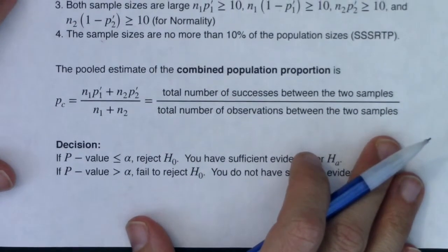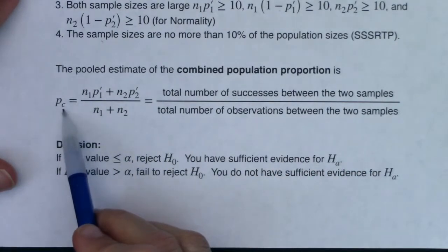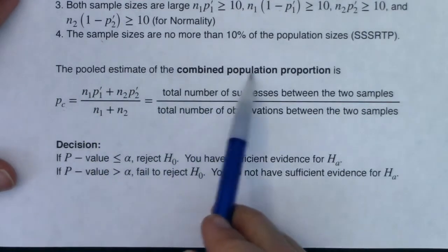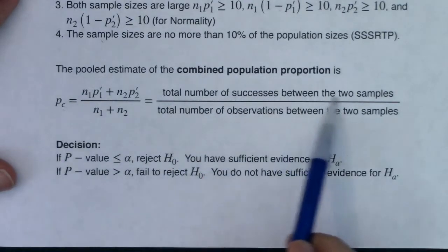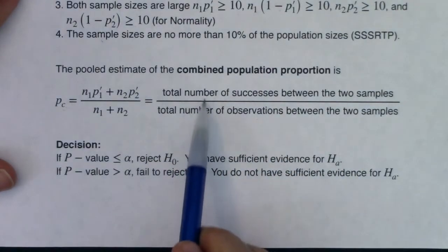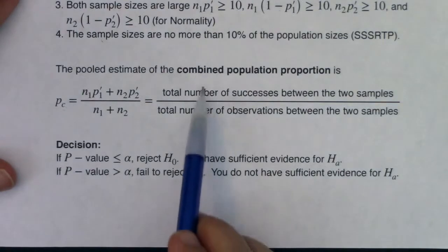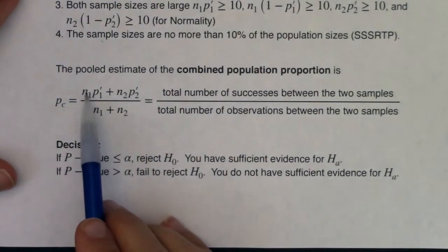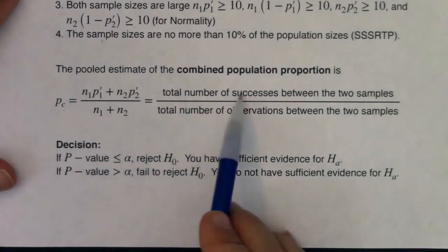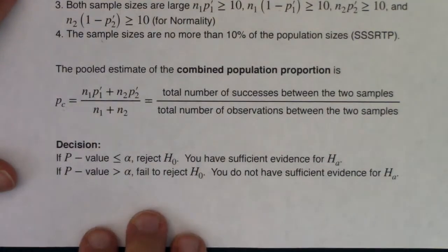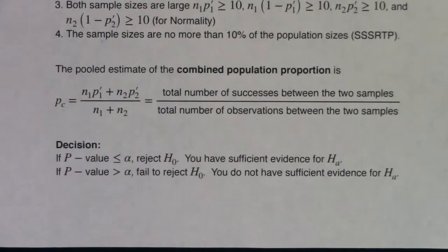As we get towards the bottom, we introduce P-sub-C, the combined or pooled population proportion. We take the total number of successes between the two samples and divide by the total number of observations between the two samples. It's easier to just use the words — numerator is total successes, denominator is total observations. You can also calculate it as N1·P1-prime plus N2·P2-prime in the numerator. Then we make our decision: reject or fail to reject.